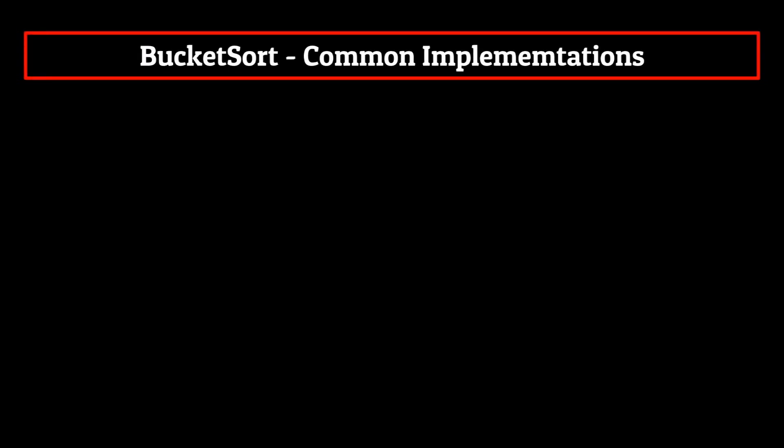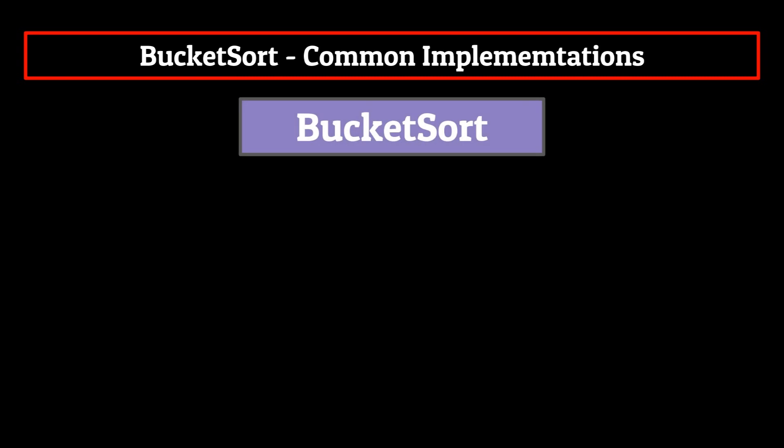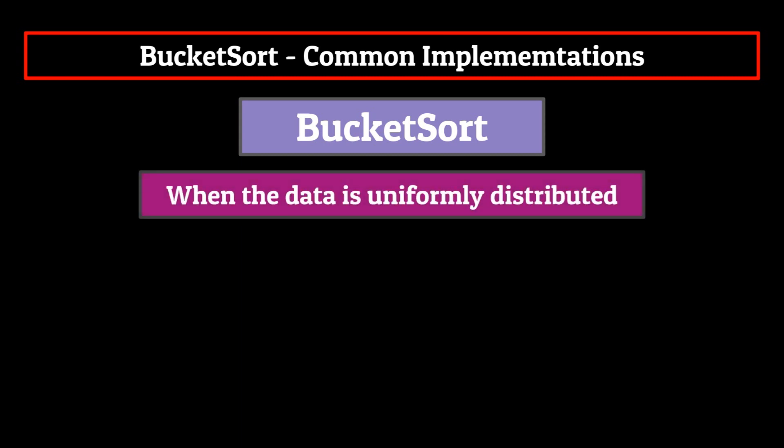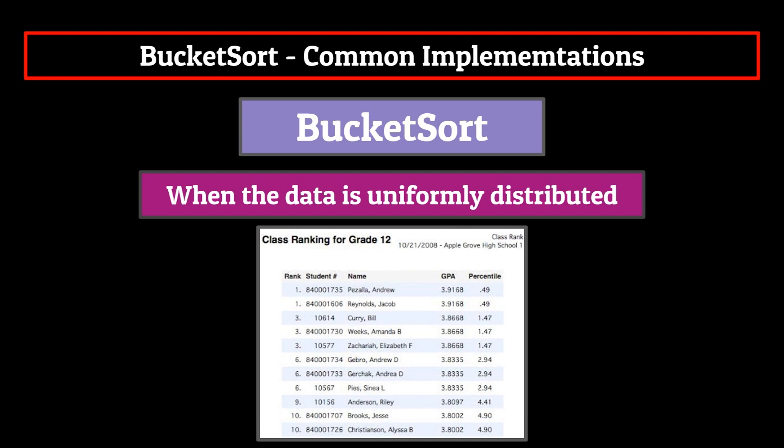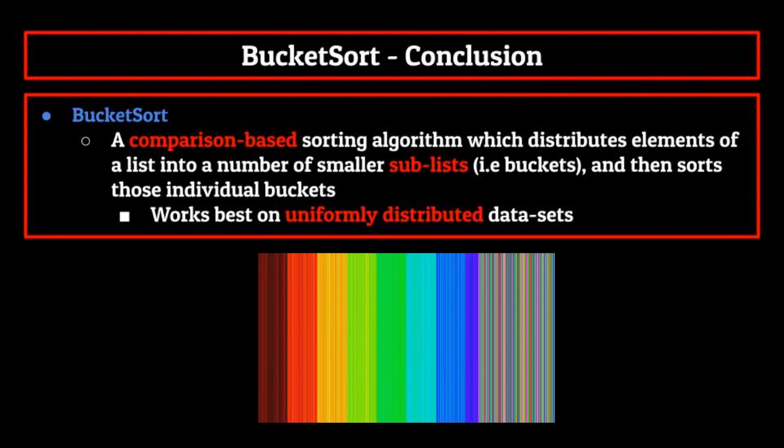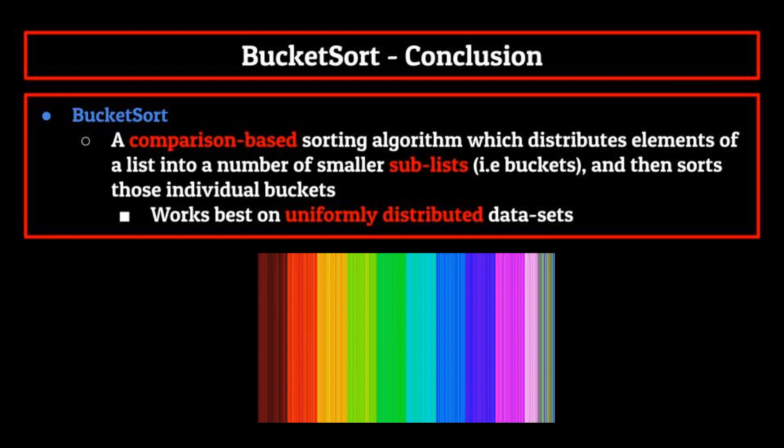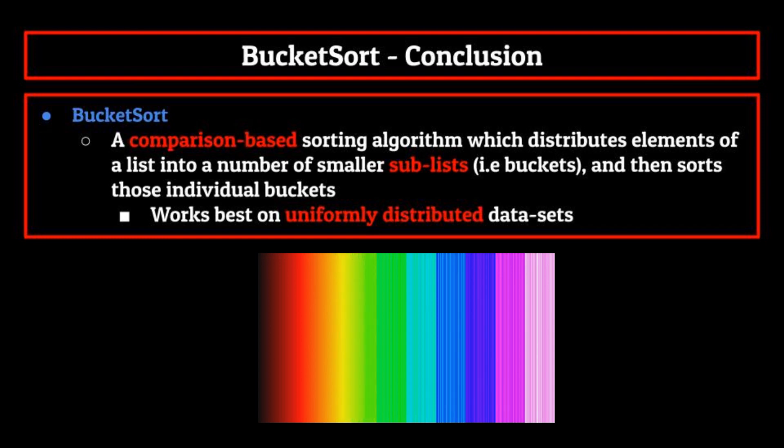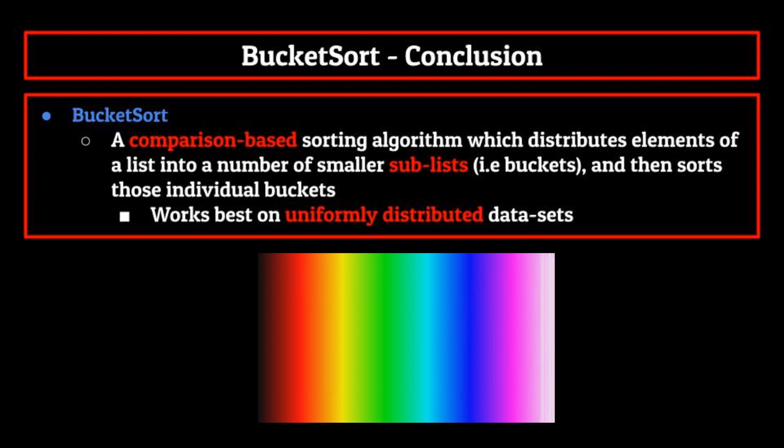Now for our final segment, it's time to talk about common implementations of bucket sort. We normally use bucket sort when the data is uniformly distributed. That is when the differences in the data are identical. This comes into play in examples like the one we talked about earlier, where we have something like a class rank system. And that concludes our discussion on bucket sort. As always, thank you for watching.